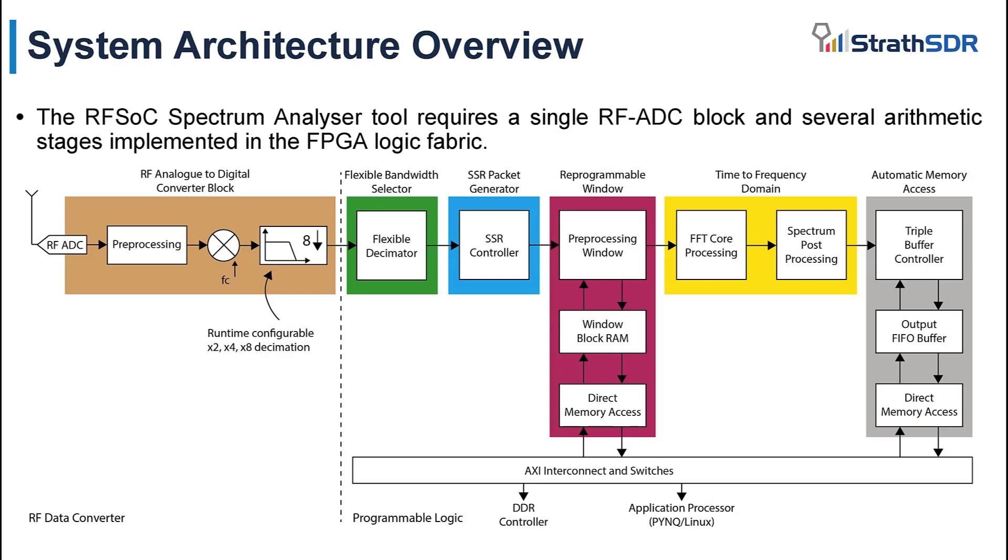This now leads on to a complete system diagram of the RFSOC spectrum analyzer tool. To begin, the signal is acquired at the RFADC block and is frequency shifted depending on the requested center frequency of the spectrum analyzer. The signal is decimated using the RFADC decimation filters and the flexible decimator in the FPGA logic fabric. Both decimation filters are runtime configurable, meaning the decimation factor can be changed while the system is operational.